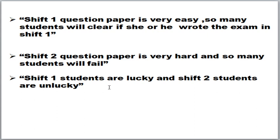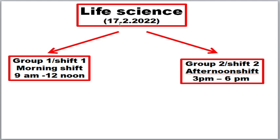All these hypotheses and questions are going to be answered. The life sciences exam was conducted on the 17th of this month into two shifts: Group 1 / Shift 1 is morning 9 AM to 12 noon, and Group 2 / Shift 2 is afternoon 3 PM to 6 PM. The reason life sciences alone is conducted in two shifts is that the total number of candidates who apply for CSIR life sciences is nearly 60,000 to one lakh, whereas other sciences have only around 5,000 to 50,000 candidates.